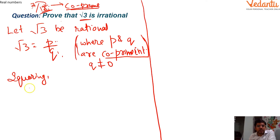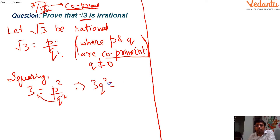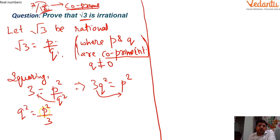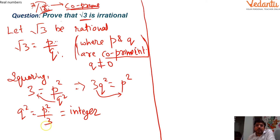Squaring both sides gives 3 = p²/q², since (√3)² = 3. Cross-multiplying gives 3q² = p². Rearranging, q² = p²/3. Since p and q are integers, q² is also an integer. For q² = p²/3 to be an integer, 3 must divide p² — otherwise we would get a decimal result.